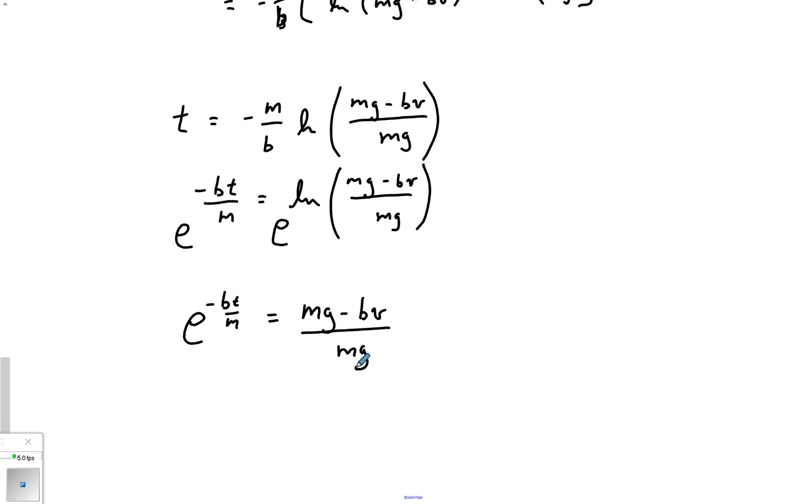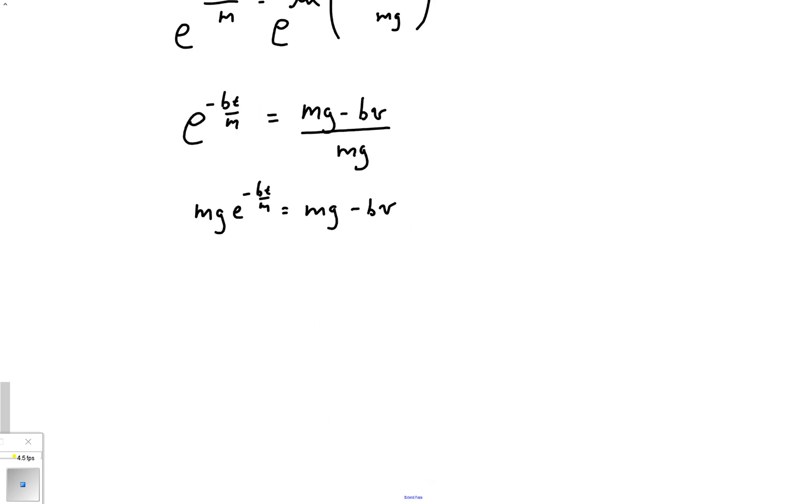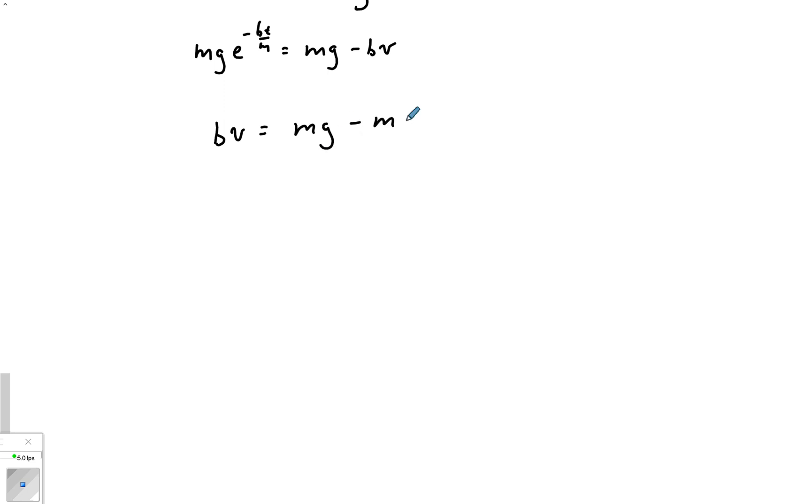And when you do that, we end up with e to the negative bt over m. What happens when you put e to the log? It just cancels out. So all we're left with is mg minus bv over mg. And I know this video is going long, but again it was mainly just a calculus video. So at this point it's a home run. Multiply both sides by mg: mg e to the negative bt over m is equal to mg minus bv. And now we need to start solving the equation for v. I'm going to rewrite it so that I get my v positive, so bv would be equal to mg minus mg e to the negative bt over m. And last step, we can factor out mg if we just want to simplify it: mg times 1 minus e to the negative bt over m. Divide both sides by b, and there ladies and gentlemen we have it.